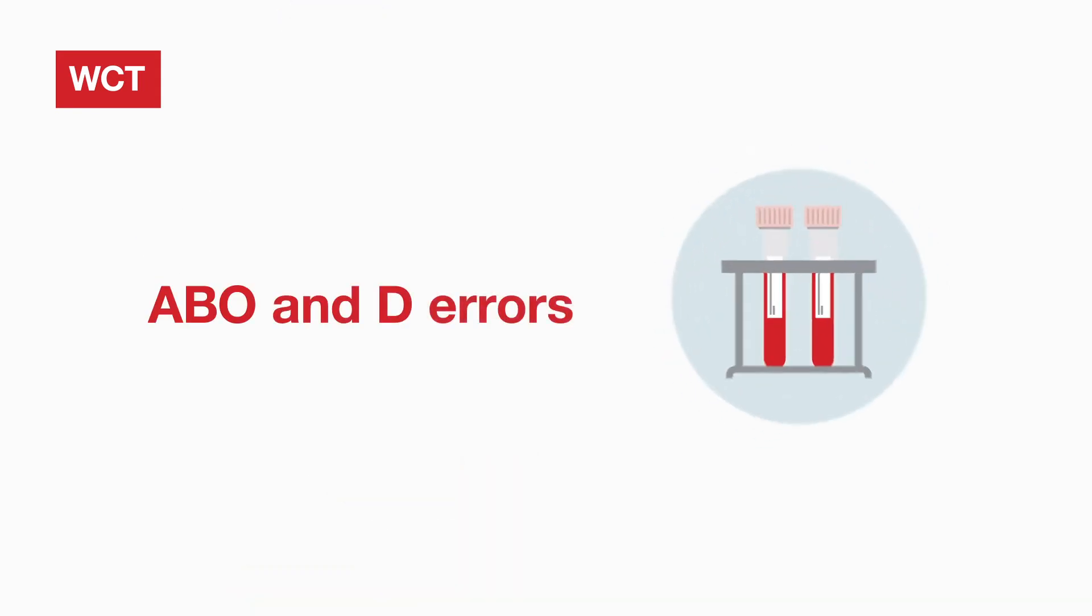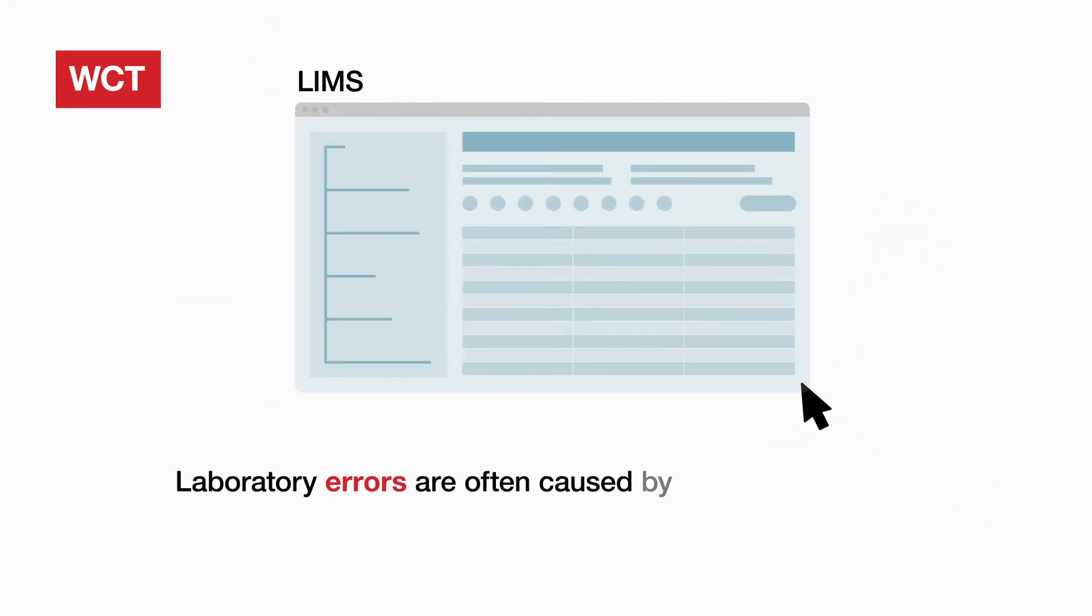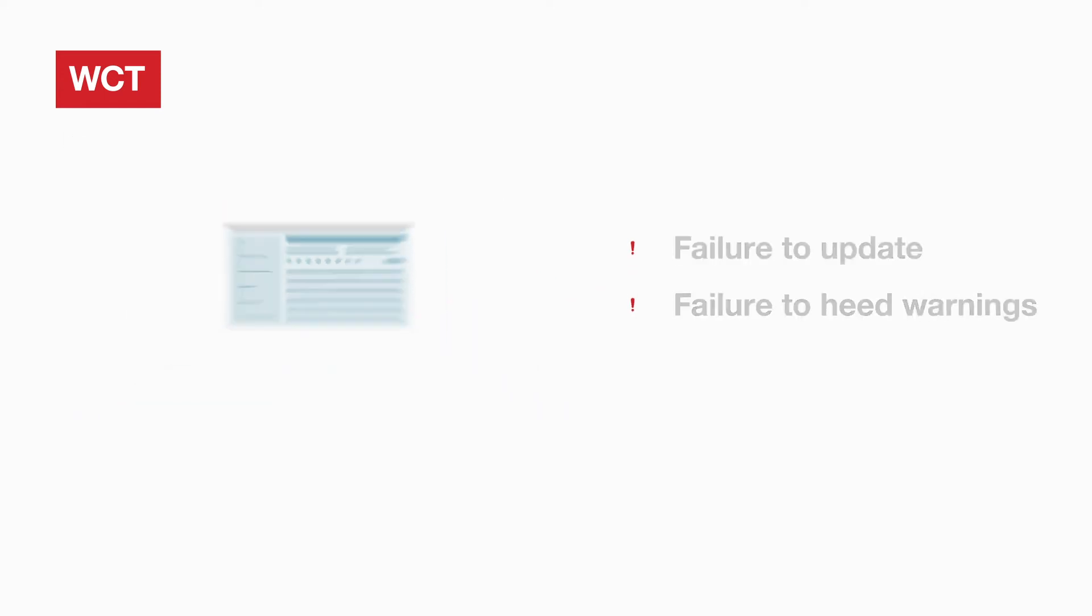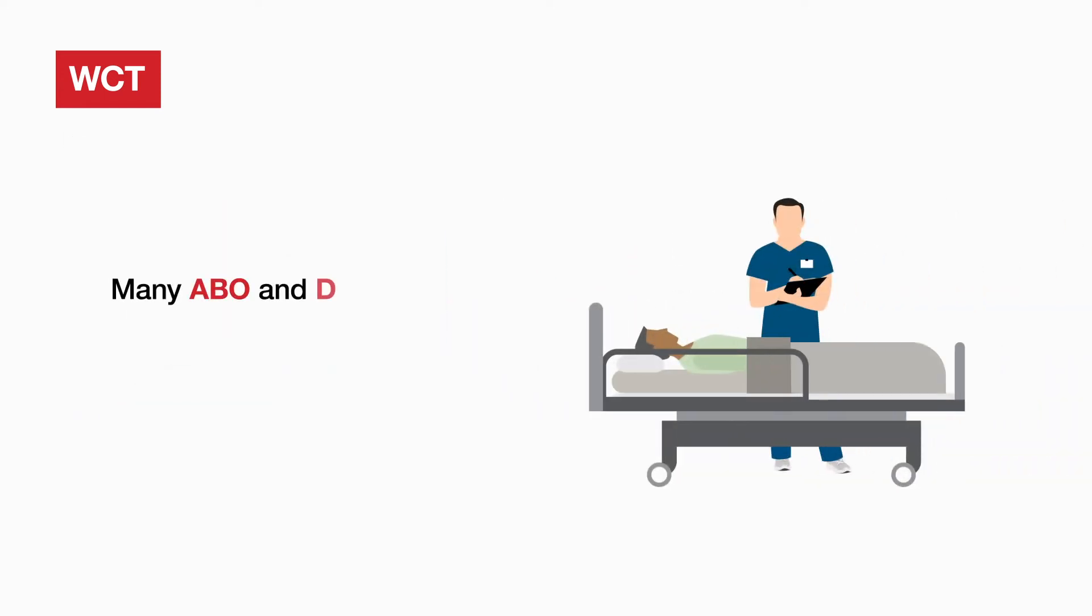Most ABO and D errors originate in the laboratory. Laboratory errors are often caused by inappropriate use of the laboratory information management system known as LIMS, which could either be due to failure to update LIMS, or failure to heed the LIMS warning flags. It is important to note that many ABO and D errors are detected prior to the transfusion, often by vigilant clinical staff.